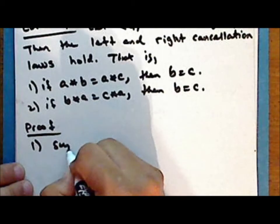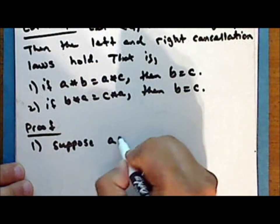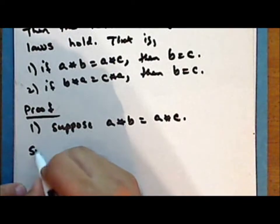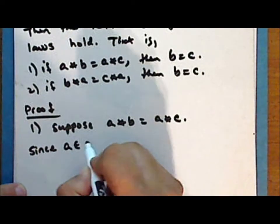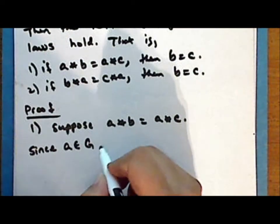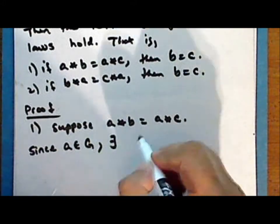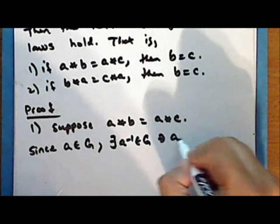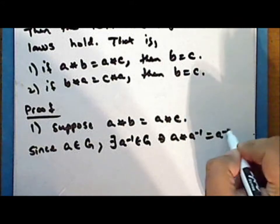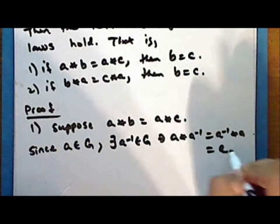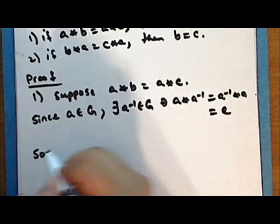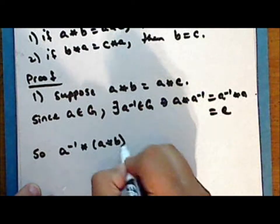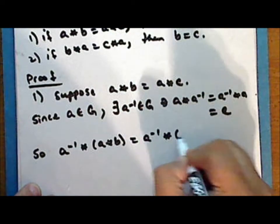Proof, first statement: suppose that A star B is equal to A star C. Now since A is an element in the underlying set G, where G is a group under the binary operation star, there exists a unique inverse for that element, also in the group, such that A star A-inverse is the same as A-inverse star A, which is the identity. And so A-inverse star (A star B) is equal to A-inverse star (A star C).